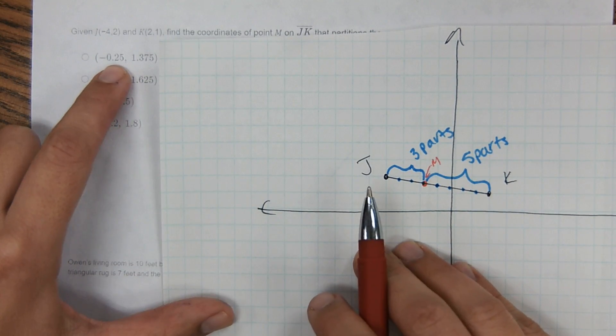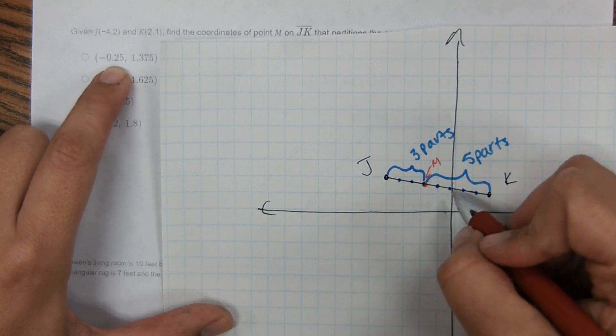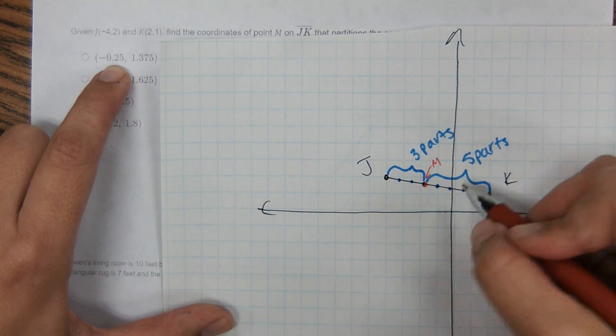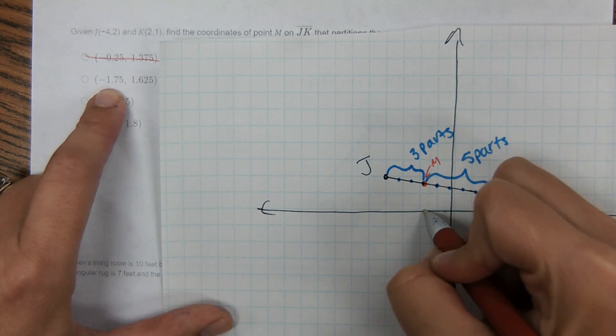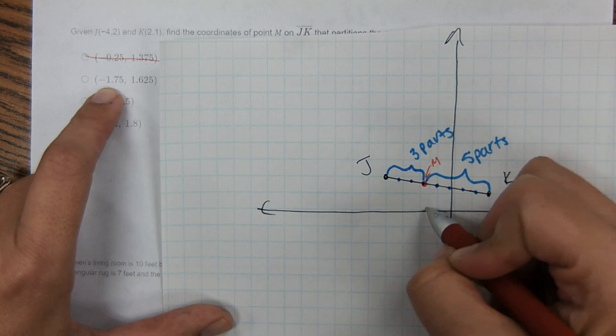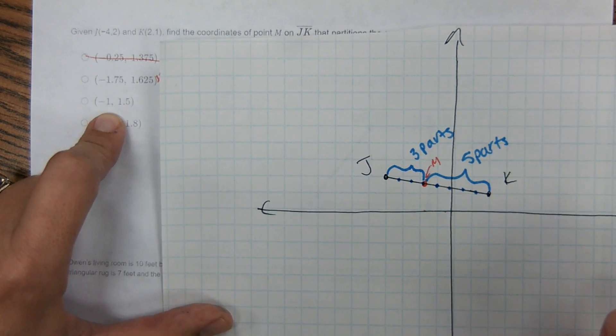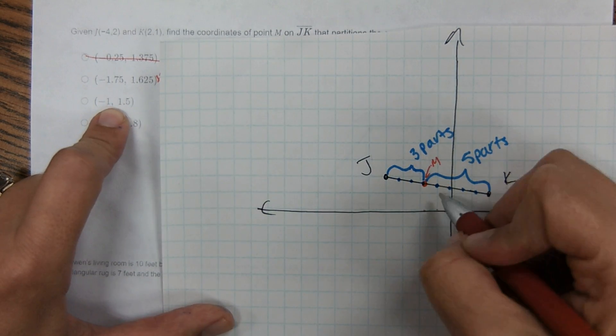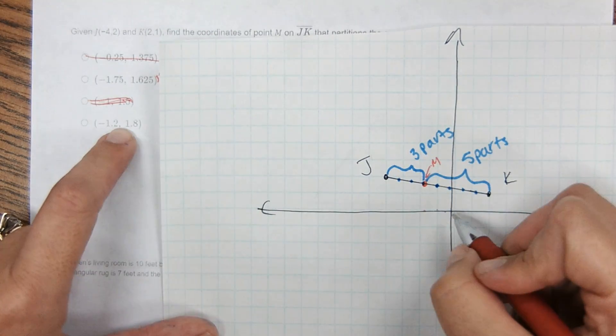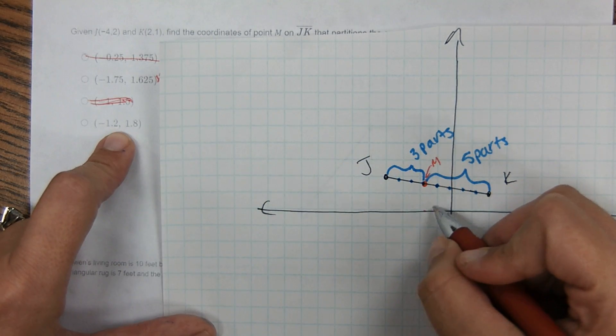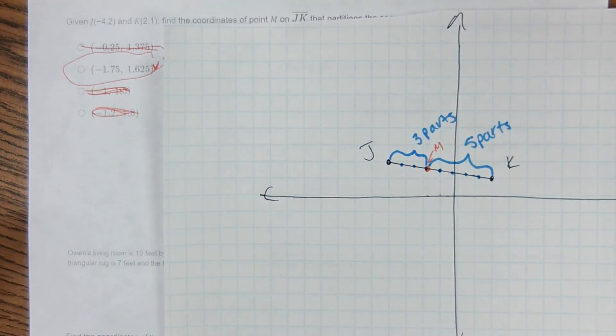So if I look at these answer choices, negative 0.25, 1.3. No, that's not where M fell. So I can cross that out. The next one, negative 1.75, 1.6. That's actually really close. That might be my answer. And then the next one says negative 1, 1.5. No, that's not where my point fell. So nope. And then negative 1.2, 1.8. Nope. So it has to be this one. And I just did that visually.